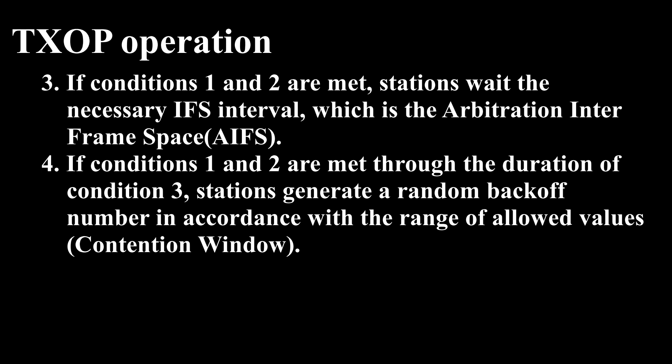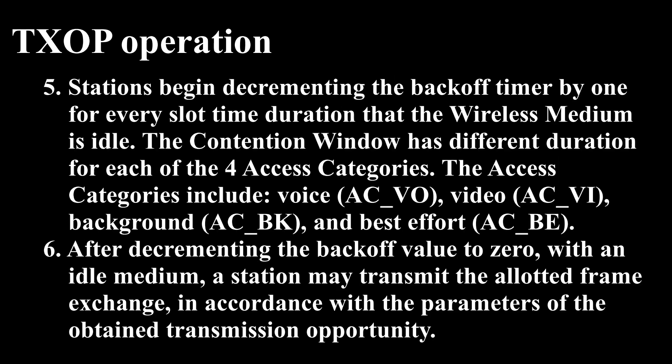If conditions 1 and 2 are met through the duration of condition 3, stations generate a random backoff number in accordance with the range of allowed values, contention window. Stations begin decrementing the backoff timer by 1 for every slot time duration that the wireless medium is idle. The contention window has different duration for each of the four access categories: voice (ACVO), video (ACVI), background (ACBK), and best effort (ACBE).